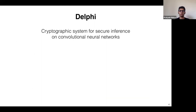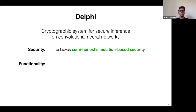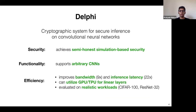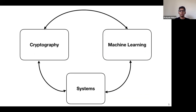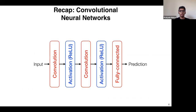In more detail, Delphi is a system for secure inference specifically for convolutional neural networks. We achieve standard semi-honest simulation-based security, support arbitrary convolutional neural networks, and improve greatly in both bandwidth and inference latency compared to prior state-of-the-art — even on networks much larger than those considered in prior work. We achieve this via a combination of cryptography, machine learning, and systems techniques.